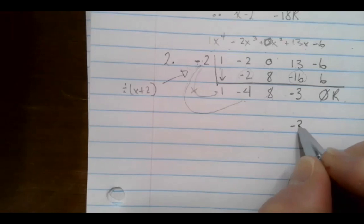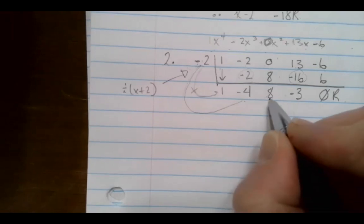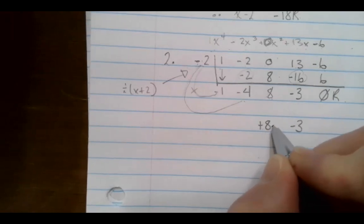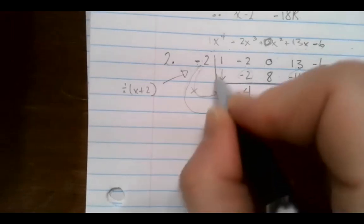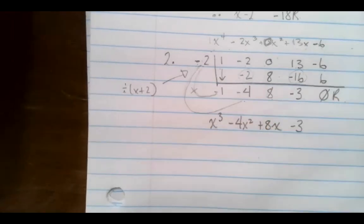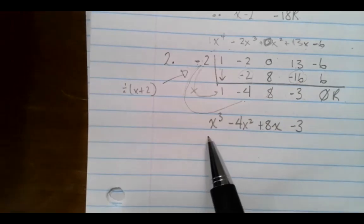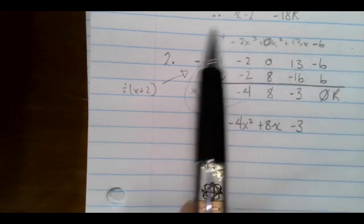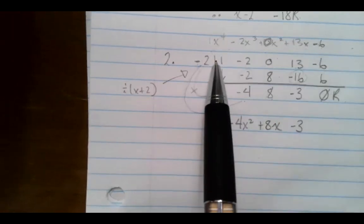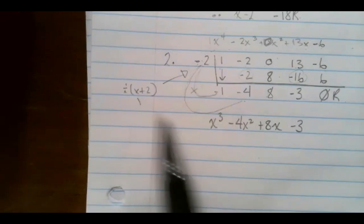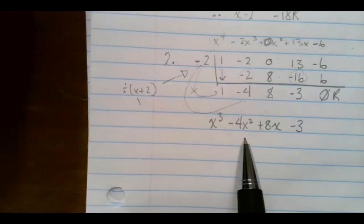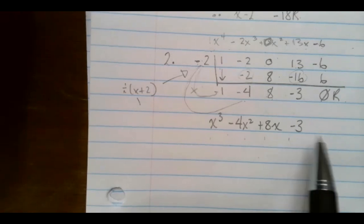And this number is just the number with no x's. This is the 8x. This goes with the x squared, and that goes with the x cubed. So if I took this and divide it by x plus 2, I would get x cubed minus 4x squared plus 8x minus 3.